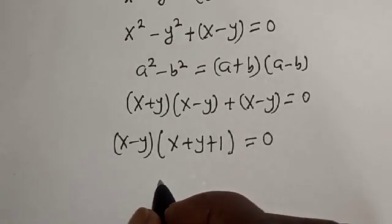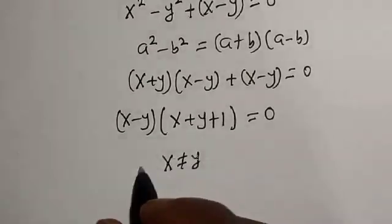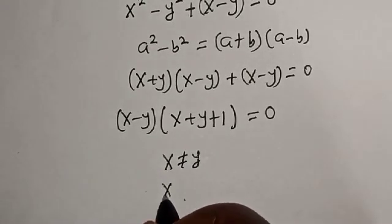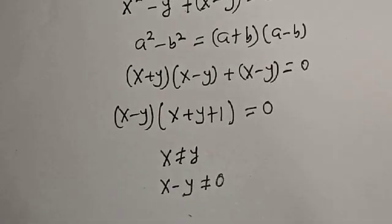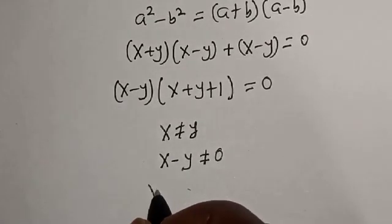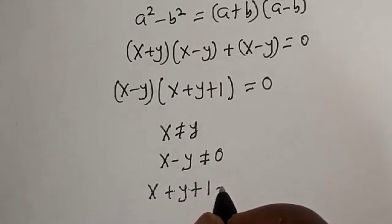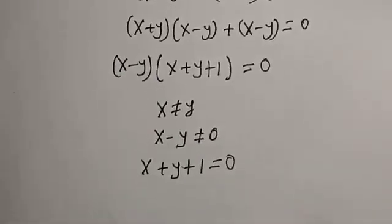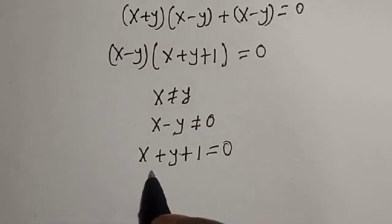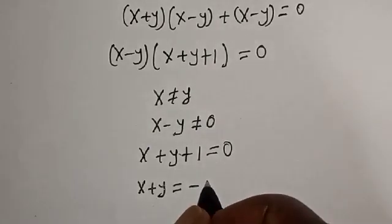Remember that we said x is not equal to y, so x minus y cannot be equal to 0. Therefore, we have x plus y plus 1 is equal to 0, because (x minus y) cannot be zero. So x plus y is equal to minus 1.